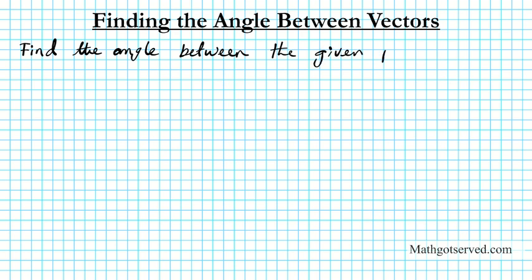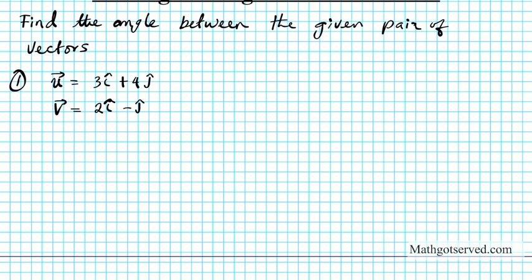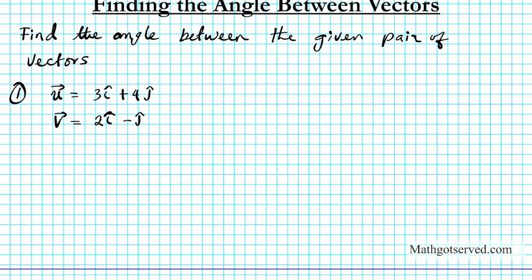So the given pair of vectors. For number 1, vector u is 3i-hat plus 4j-hat, and vector v is 2i-hat minus j-hat. So I want to find the angle between these two vectors. Let's make a sketch just to give you a visual as to what we're dealing with.